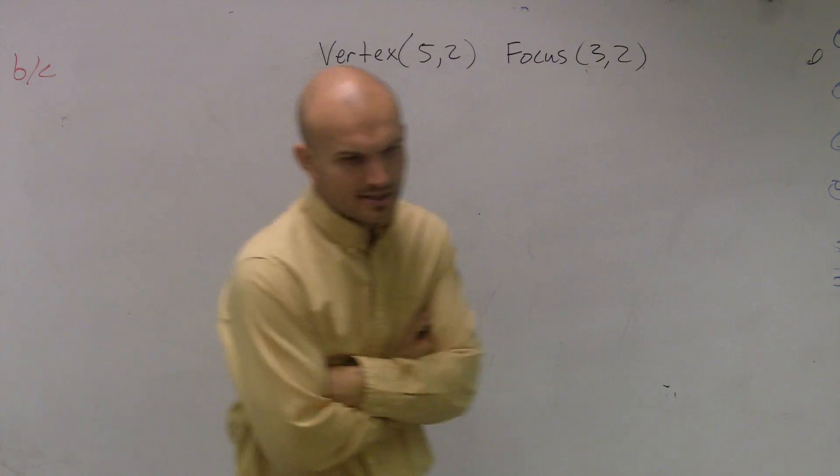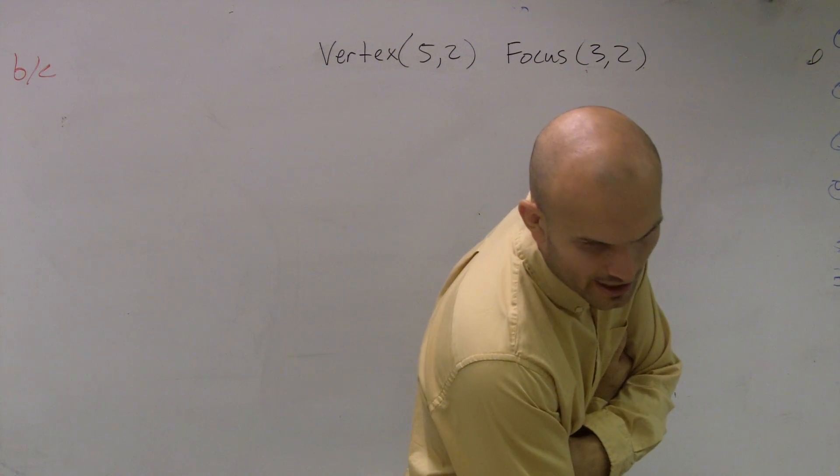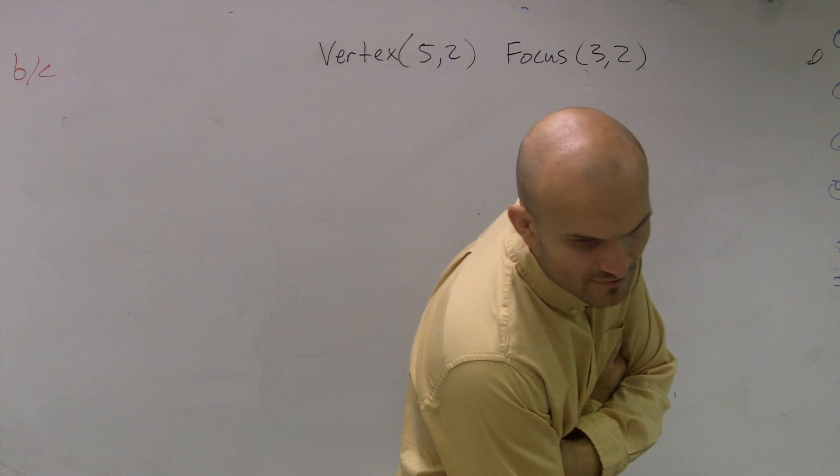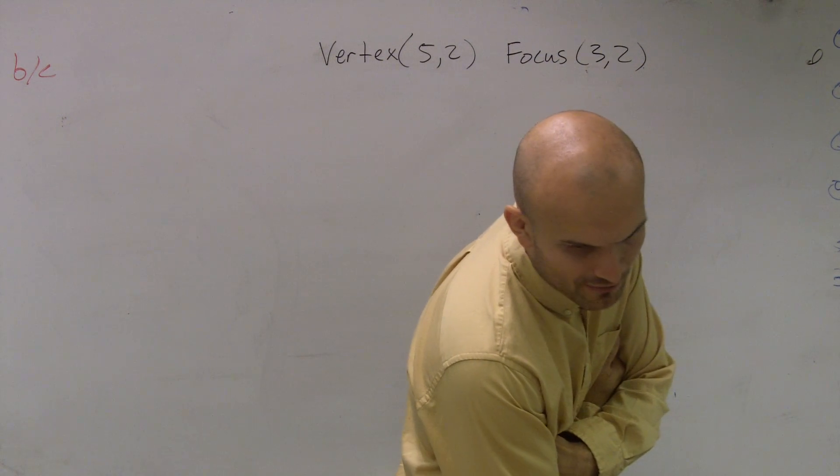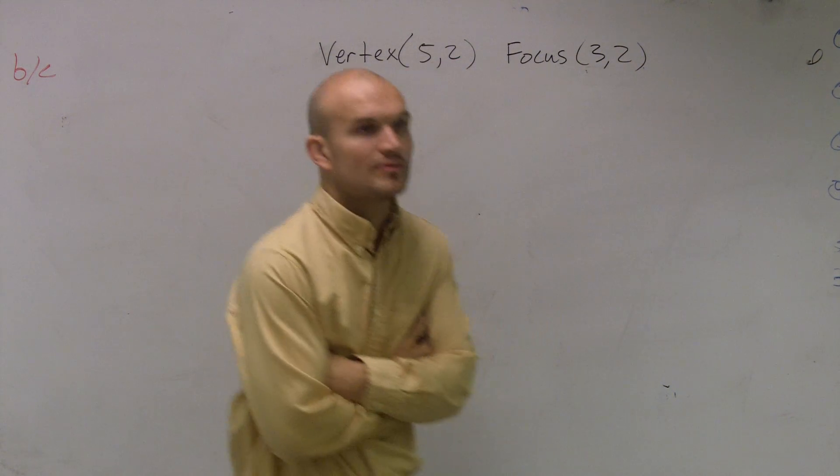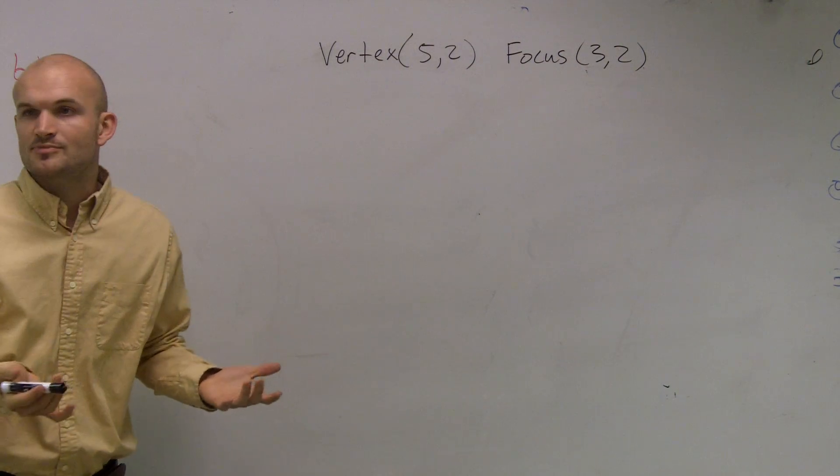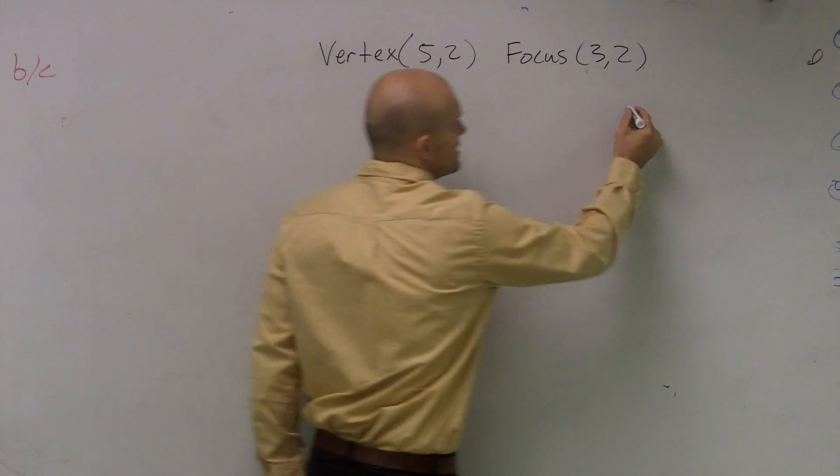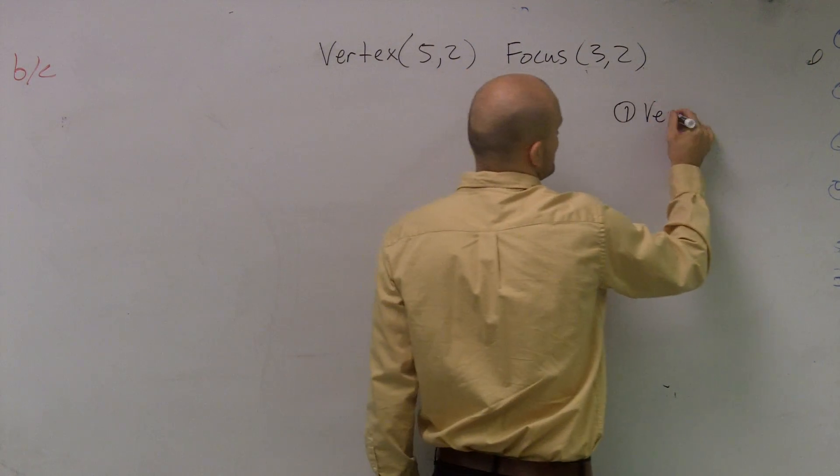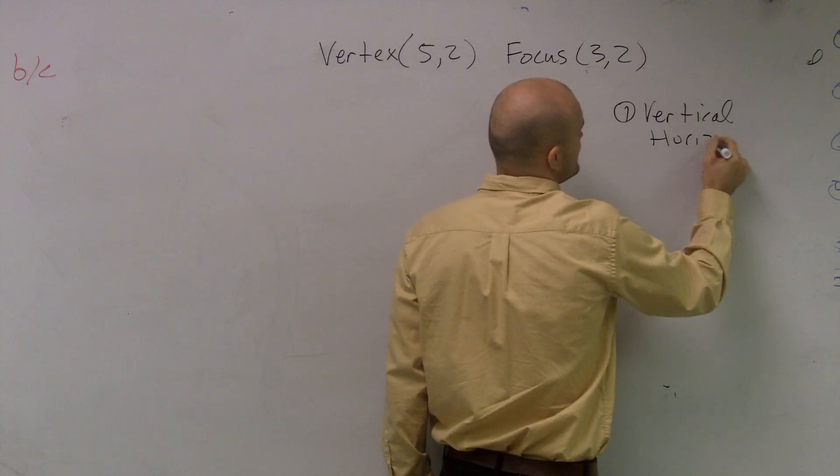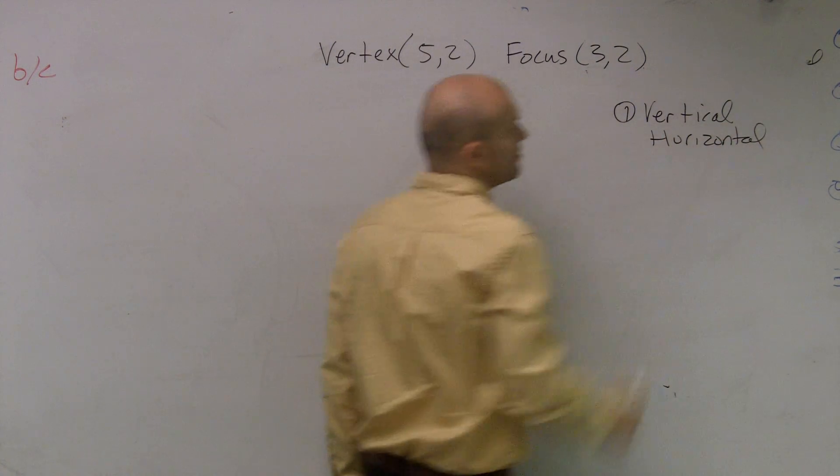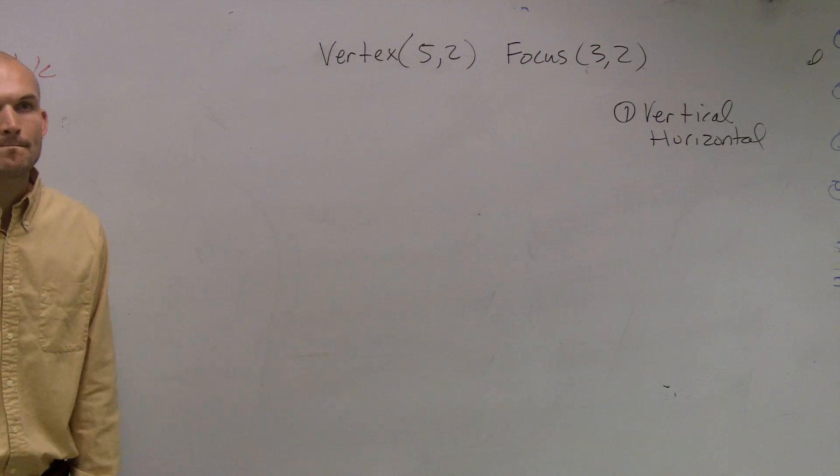So we have the vertex. Is there any other information on this? Okay. Find the vertex standard form of the equation of the parabola. Forty-seven. So we have the vertex is 5 comma 2, and the focus is at 3 comma 2. So let's go and plot these points, because the first thing we need to do is determine, is this a vertical or a horizontal parabola?